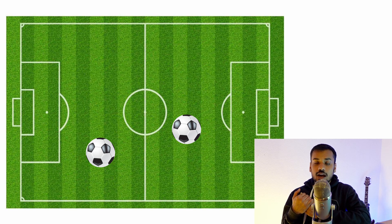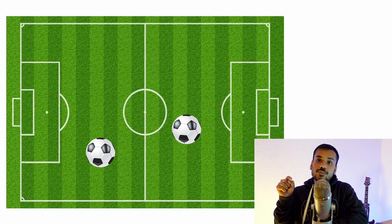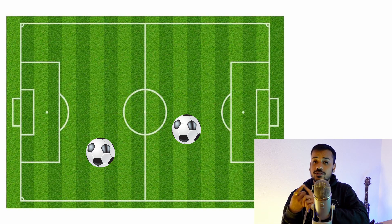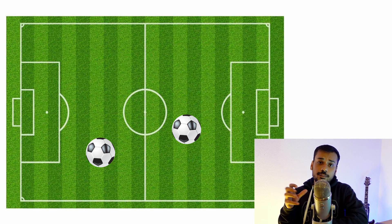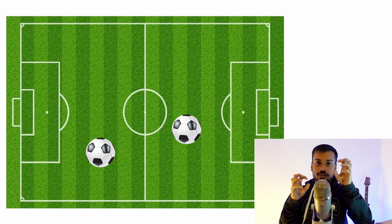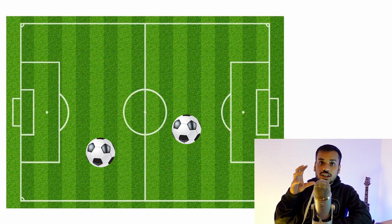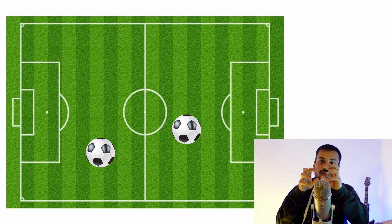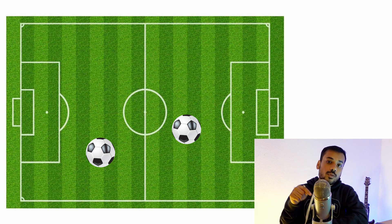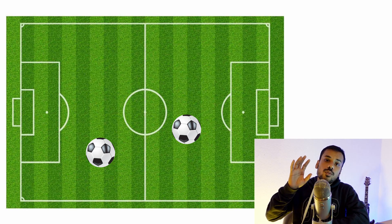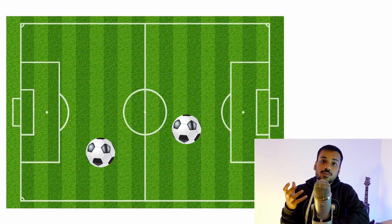Let's make the problem statement even harder. Suppose you have two footballs in the frame and you want to track both of them. Using a detector on each frame, you might lose track of one ball due to occlusion or imperfect detection. If a ball is missing for around 20 frames and its position has interchanged with the other ball, you might confuse ball one for ball two. How do you track these balls and estimate position even when the detector misses detections? These are the kinds of problems where a Kalman filter comes into the picture.